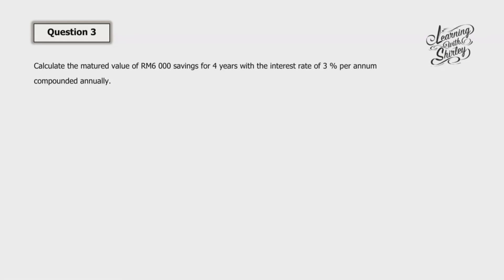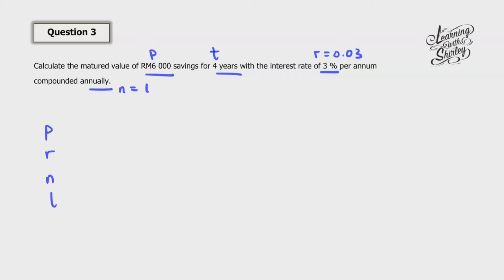For question three: Calculate the matured value of 6000 ringgit savings for 4 years at an interest rate of 3% per annum compounded annually. So P is 6000, T is 4, R is 0.03, and per annum compounded annually means N equals 1. Extracting: P is 6000, R is 0.03, N is 1, and T is 4 years.